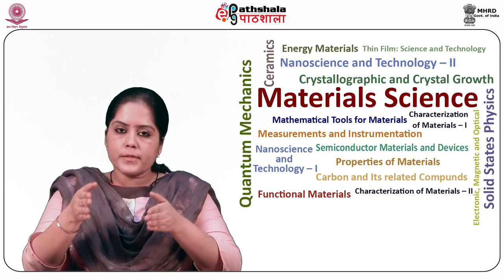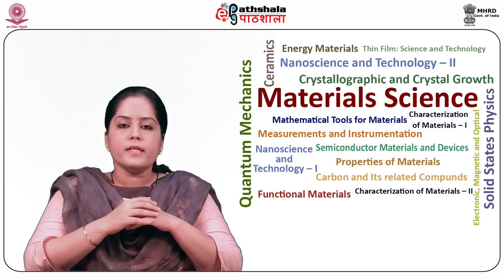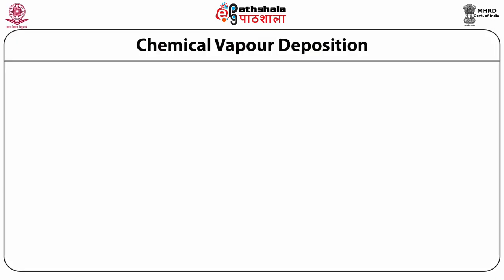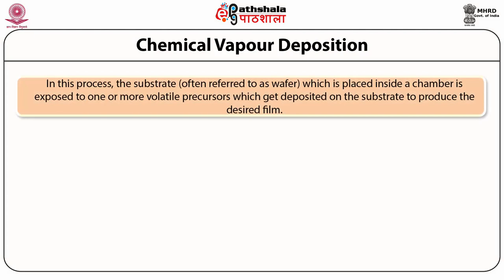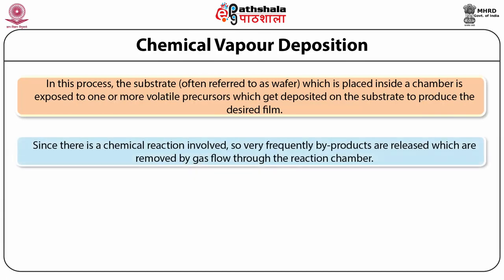In chemical vapor deposition, the substrate — often referred to as the wafer — is placed inside a chamber and exposed to one or more volatile precursors, which get deposited on the substrate to produce the desired film. Since a chemical reaction is involved, byproducts are frequently released, which are removed by gas flow through the reaction chamber.